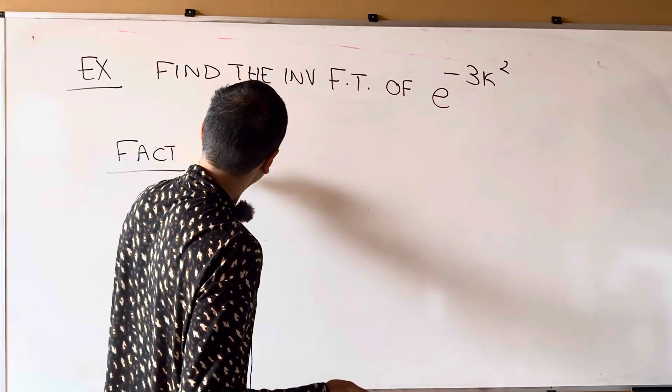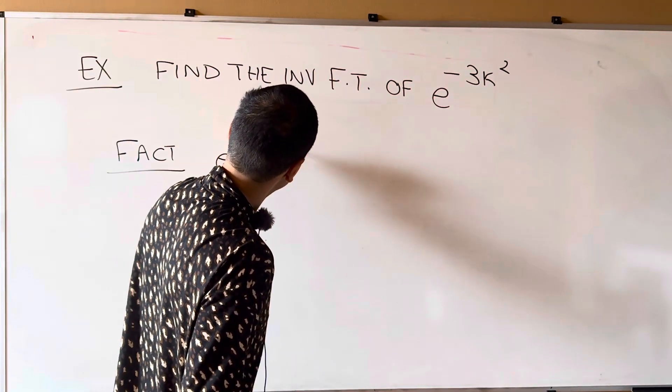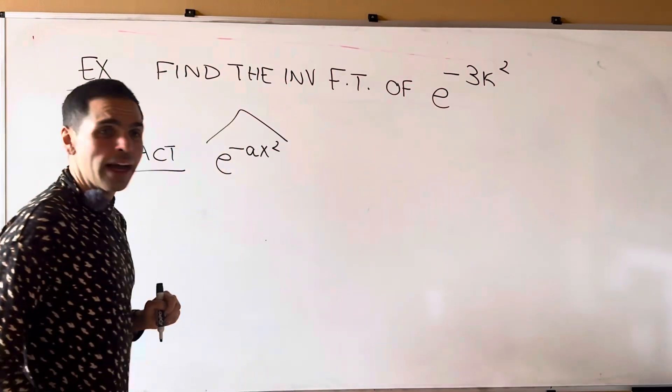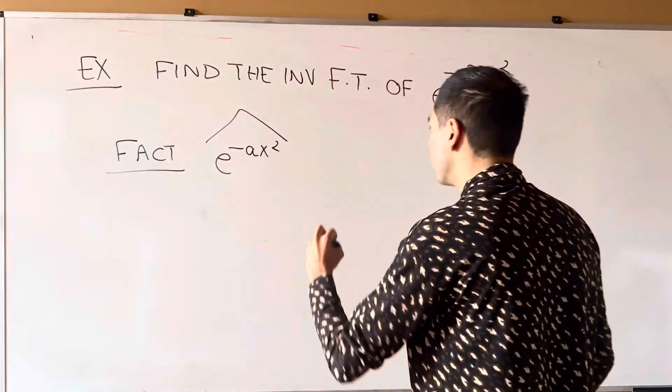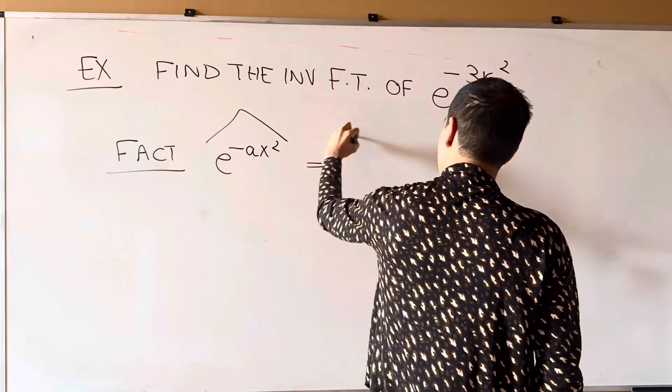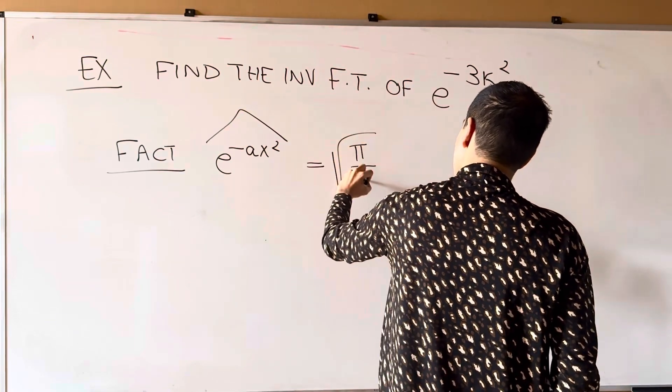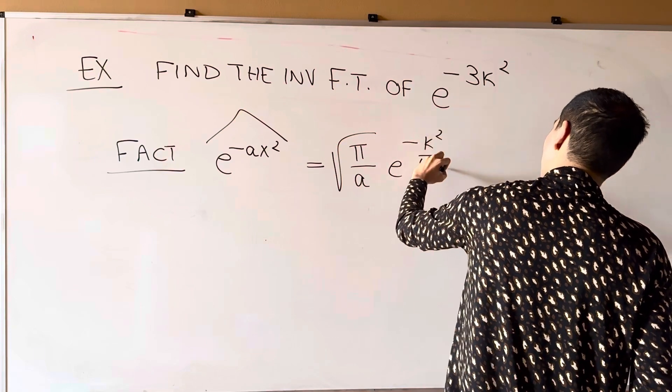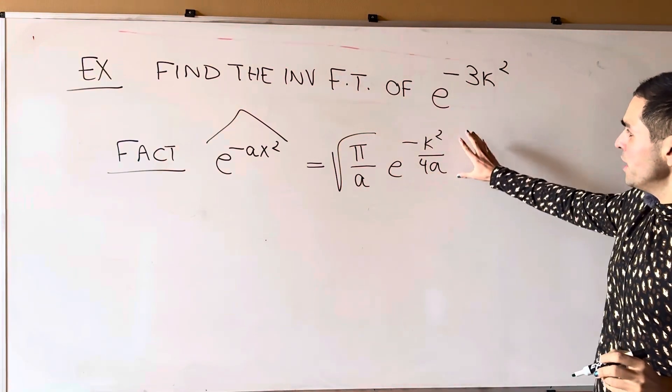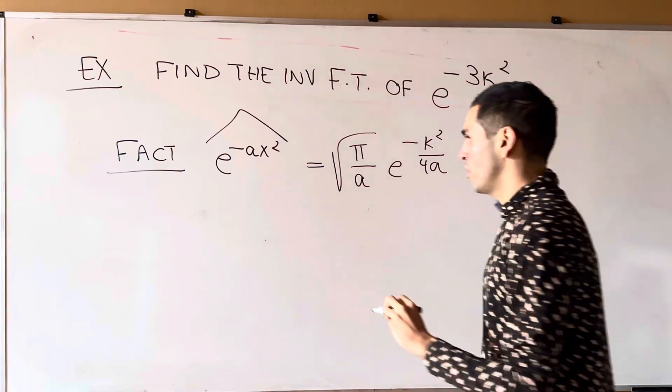Because I would like to remind you that the Fourier transform of e to the minus a x squared is, I believe, square root of pi over a times e to the minus kappa squared over 4a. And so in particular, we can back solve.